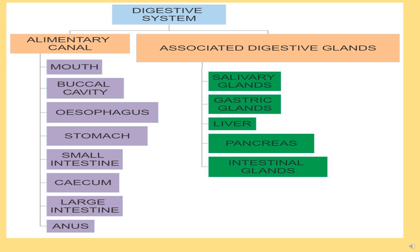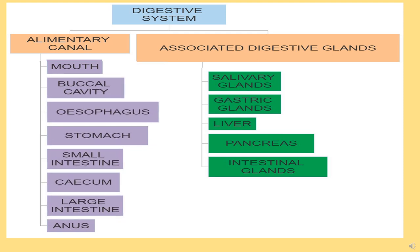The digestive system includes the alimentary canal and digestive glands. The alimentary canal consists of mouth, buccal cavity, pharynx, esophagus, stomach, small intestine, cecum, large intestine, and anus.